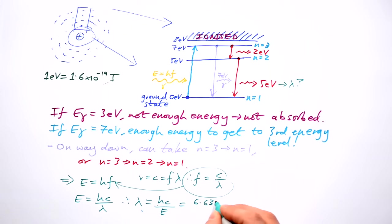This is going to be 6.63 times 10 to the minus 34 times 3 times 10 to the 8 divided by—well it's 5 electron volts, that's 5 times this many joules. Whenever we do any calculations, we always have to use joules.